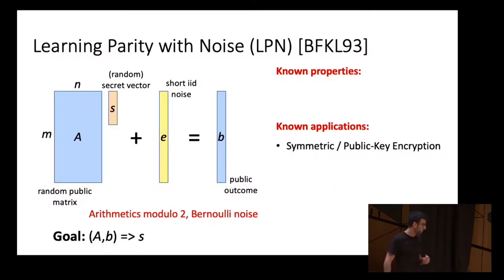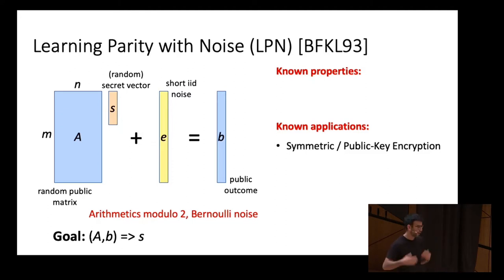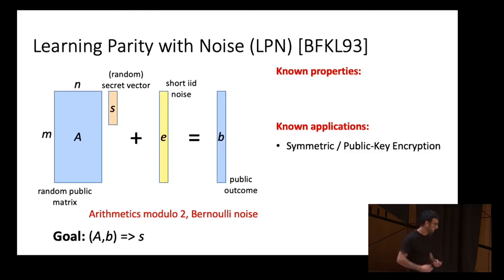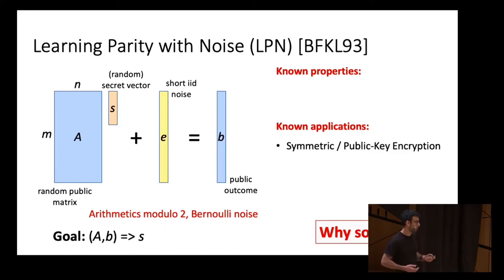But it's not the case. We don't know of a worst case to average case reduction or SZK result for LPN. In terms of applications, we can get symmetric and with some parameter regimes also public key encryption, but many other applications are still unknown. There's a lot of recent progress in constructing primitives from LPN. However, we can still ask: why is what we can do with LPN so different from what we can do with LWE? There are a number of attempts to explain this difference, and we want to try to close this gap.